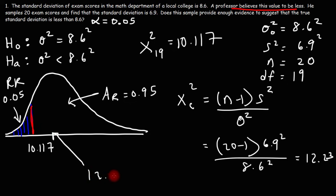So 12.23 is somewhere to the right of 10.117. Therefore, we will not reject the null hypothesis because it's in this region, which is the do not reject the null hypothesis region.